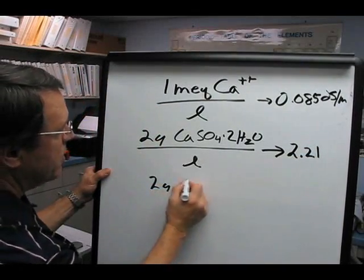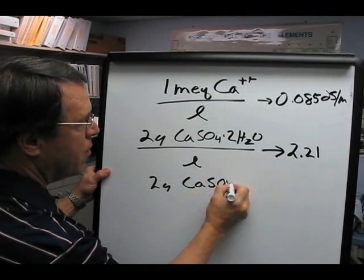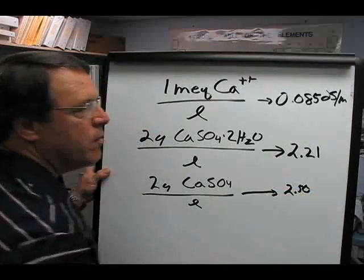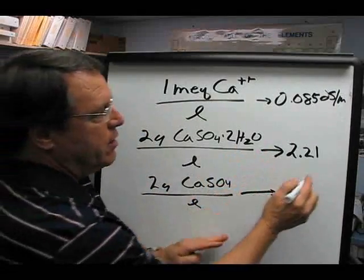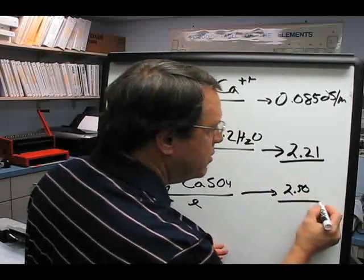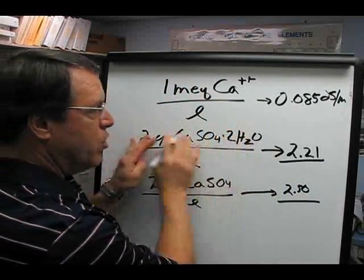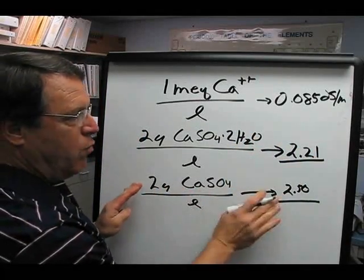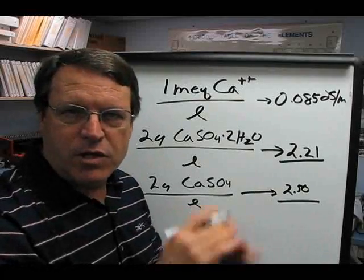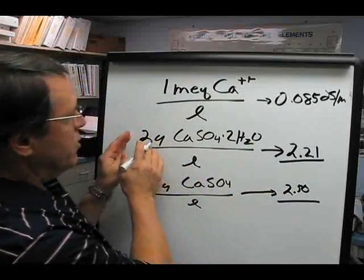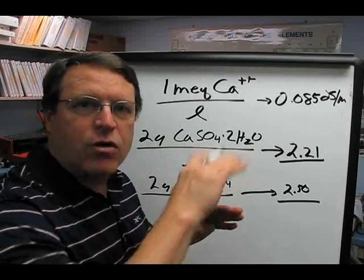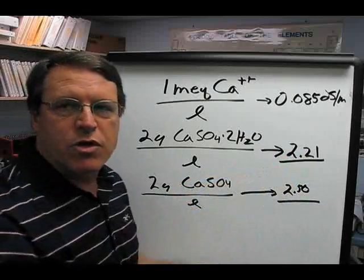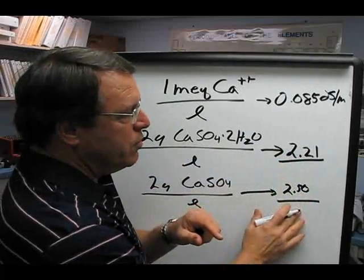If we use two grams of calcium sulfate anhydrite per liter, that should increase electrical conductivity by 2.50 decisiemens per meter. These numbers give you an idea of the target we'd be looking for when we dissolve this amount of calcium sulfate or gypsum dihydrate in water. If they dissolve properly, they should start to approach these two numbers.